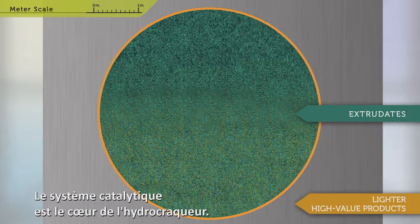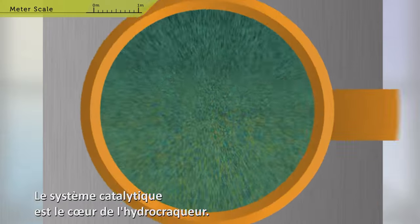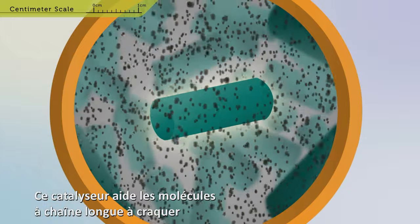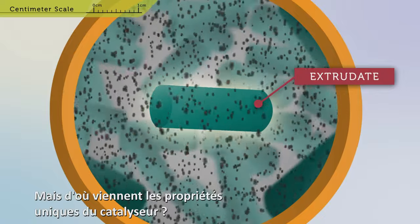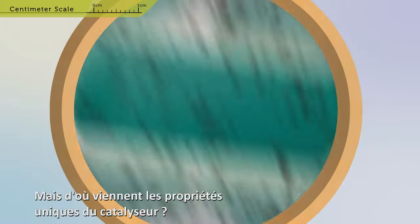The catalytic system is the heart of the hydrocracker. This catalyst helps the long chain molecules to break or crack into the desired smaller molecules. But where does this unique property of the catalyst come from?